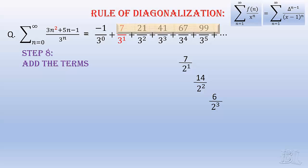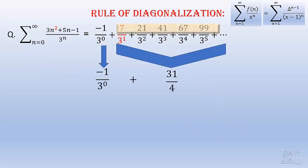Then, add the terms so formed diagonally and get the result. The result, that is, 31 by 4, is only the sum starting from the term 7 by 3. Hence, also add minus 1, hence the final answer will be 27 by 4.